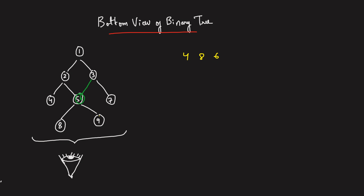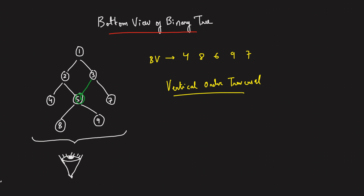If you look over here, node 9 is covering node 3, so you see node 9. And over here you see node 7. So the bottom view is: 4, 8, 6, 9, 7. In order to solve this problem, we are definitely going to use the concept learned in vertical order traversal — that is the line concept. We'll be using level order traversal.